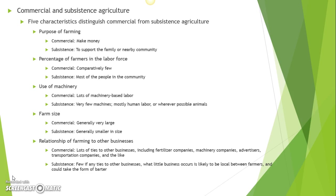Subsistence farmers, on the other hand, make up most of the people that live within the community — it tends to be a lot of people. Another way to look at this is that most commercial agriculture occurs in more developed countries, and subsistence agriculture tends to occur in less developed countries. That's just another way of thinking about levels of development in terms of what types of economic activity people are engaged in.